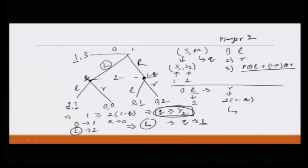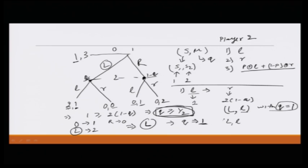So let me write this out: (L, l) with Q = 1. Let us verify: player 1 is playing L, can player 2 do better by deviating to R? His payoff decreases from 1 to 0, so player 2 is not better off by deviating. And player 1, given player 2 is playing l, should also not deviate. This is the consistent belief, so we have obtained one perfect Bayesian equilibrium.